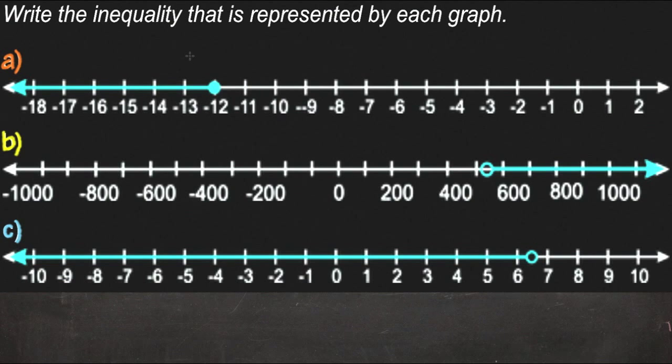Okay, for example B, we're given a picture of three inequalities and we need to write out the inequality that's represented by each graph. Now recognize again that what's graphed here is what the variable can be.